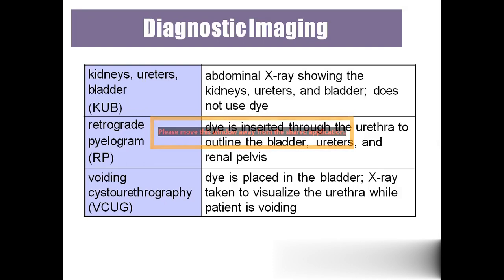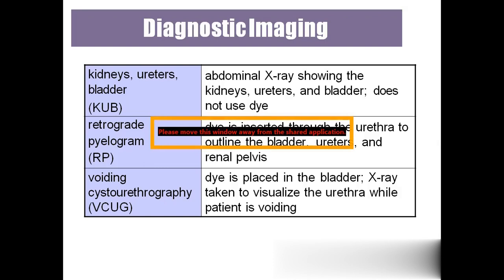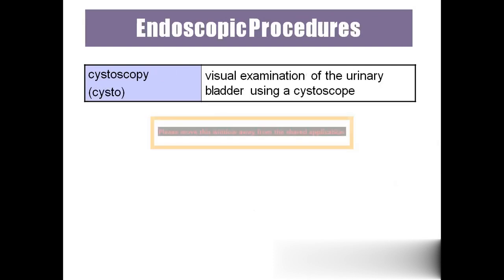Retrograde pyelogram: dye is injected into the urethra (rather than intravenously) and an x-ray of the renal pelvis is taken. Voiding cystourethrography: dye is placed directly into the bladder and an x-ray is taken while the patient is urinating. Cystoscopy: visual examination of the urinary bladder using an instrument called a cystoscope, which has a small camera; the instrument is inserted through the urethra and the interior of the bladder is viewed on a monitor.